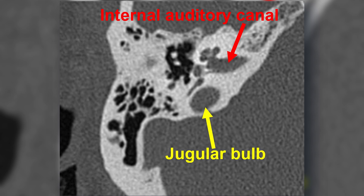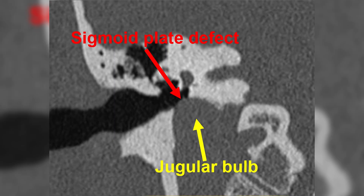It is usually an incidental finding and otoscopy is normal. Dehiscent jugular bulb is a congenital variant in which the high jugular bulb protrudes into the middle ear cavity through a dehiscent sigmoid plate. It may be associated with pulsatile tinnitus. On otoscopy, it appears as a bluish vascular lesion visible through the tympanic membrane.